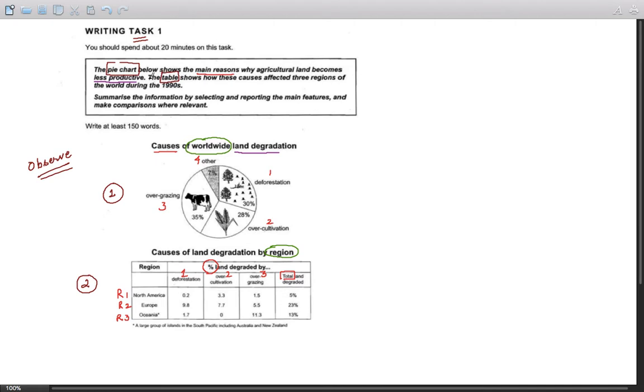The pie chart below shows the main reasons why agricultural land becomes less productive. Now let us look at the pie chart shown in the picture before proceeding to the table. Instead of main reasons, the examiner or the question talks about causes of why agricultural land becomes less productive. Less productive is changed to land degradation.